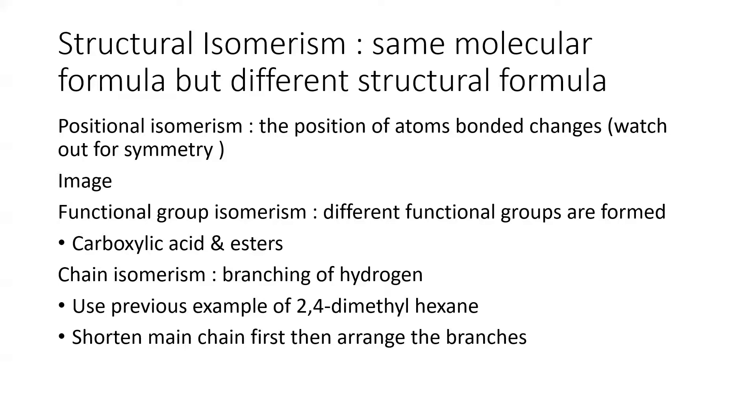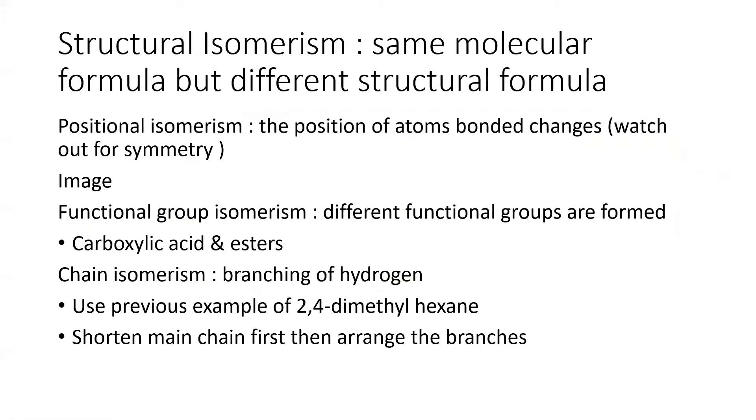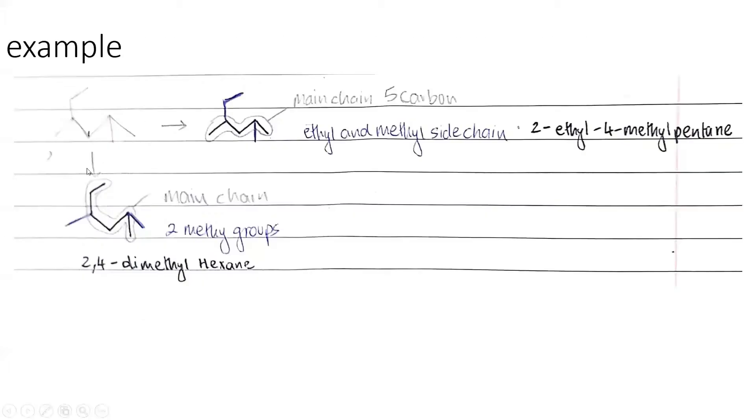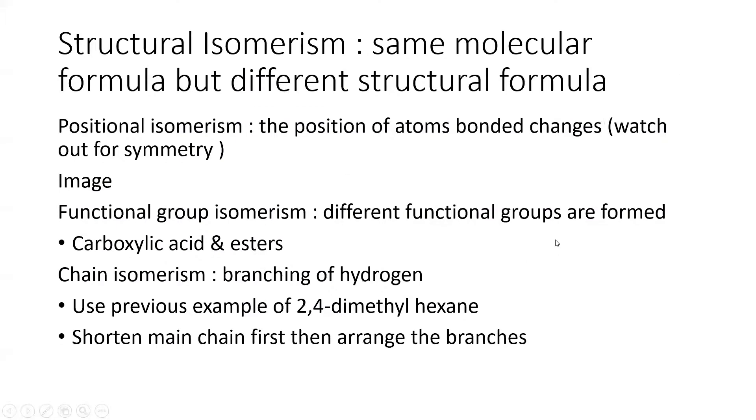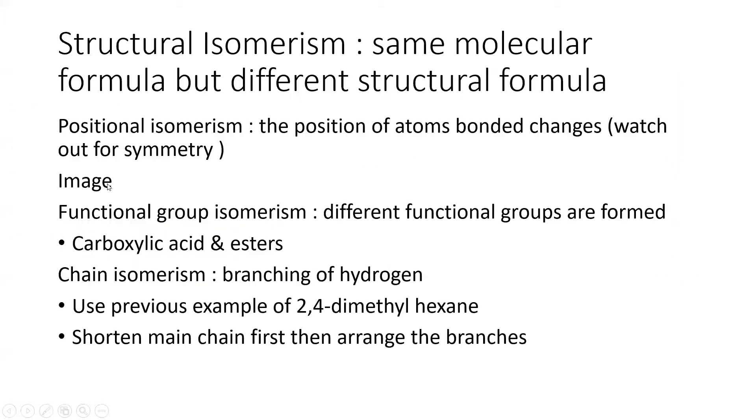Next up, we have chain isomerism, which is a branching of hydrogen. So we need to use, I'll be using a previous example of 2,4-dimethylhexane in this case. So this is a perfect chain isomerism example. I mean, not exactly a perfect example, but you can just take note that the number of side chains have changed. Like, in this case, it's a pentane and hexane. The side chain is 2-methyl. And in this case, it's 1-ethyl and 1-methyl. So hence, it's not the same molecule. I mean, it is the same molecule, but just for reference, for this example, just assume that the main chain has changed. Okay, so a tip for this is to shorten the main chain first, then rearrange the branches. So if you were to break this further, break this down any more, this can be broken down into 5 and then maybe 4. And then you change the remaining side chains and arrange them accordingly.